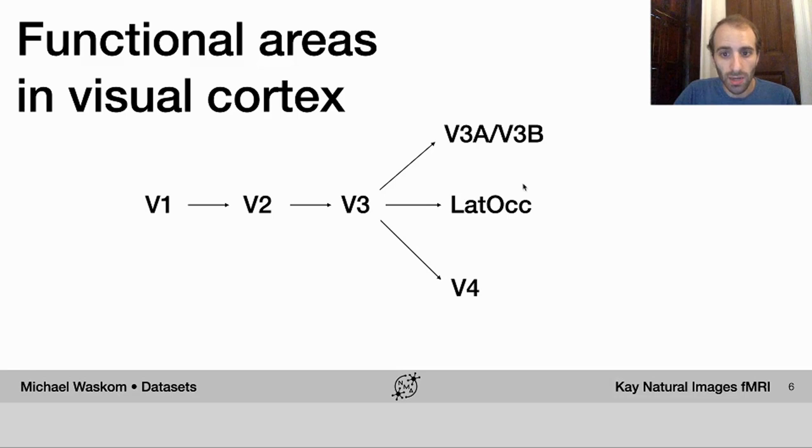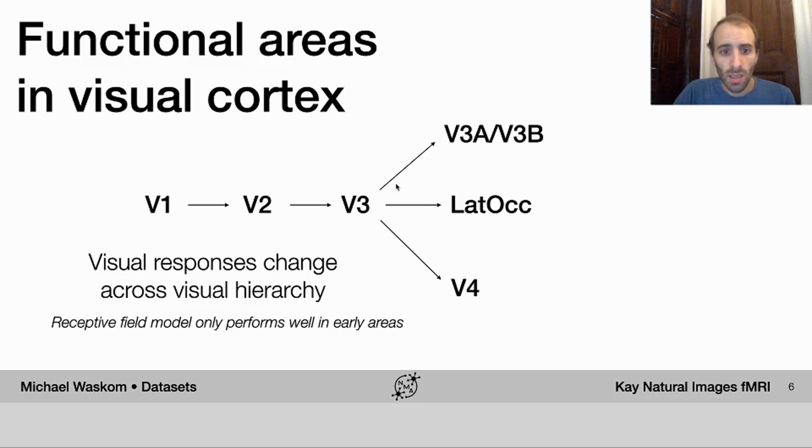And then more intermediate regions like V4, V3AB, and areas in the lateral occipital cortex are thought to have more complex response properties. And indeed, the model that I just told you about only worked well in these early visual regions.